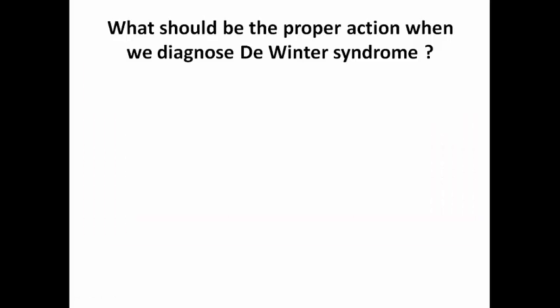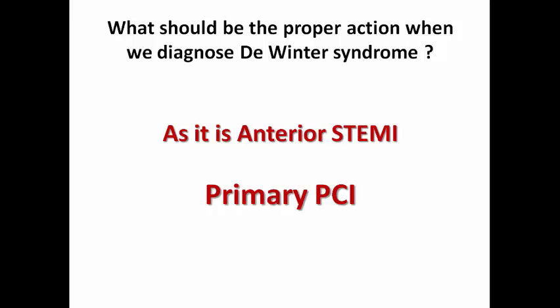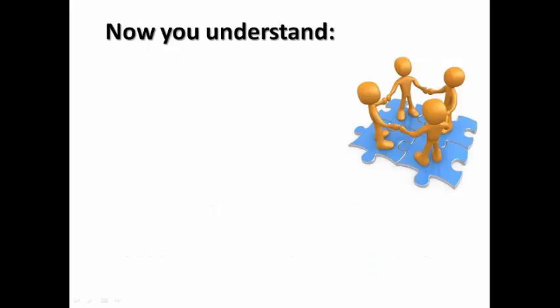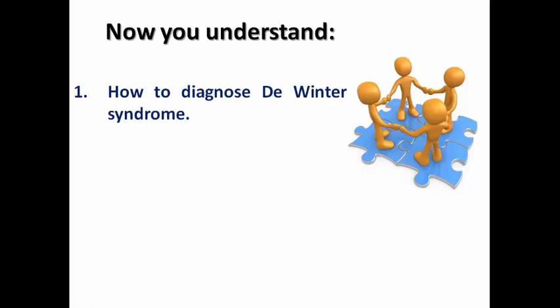What is the proper action when De Winter syndrome is diagnosed in the ER? The answer is simple: as it is an anterior STEMI equivalent, this patient should be scheduled for primary PCI. Do not classify this patient as non-ST-elevation acute coronary syndrome just because there is no ST elevation and arrange only for early invasive strategy. Regardless of the absence of ST elevation, De Winter syndrome was defined because these two ECG features appearing together indicate total LAD occlusion — therefore this patient must be treated as anterior STEMI and scheduled for primary PCI.